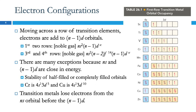We see a similar thing happen with copper. Here we would expect it to be 4s2, and yet it's 4s1 and 3d10. In doing that, now we have a half-filled sublevel and a completely filled sublevel, whereas before we would have had one completely filled sublevel and then 9 out of 10. Symmetry is a bonus here.